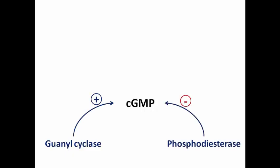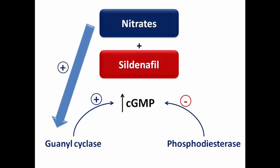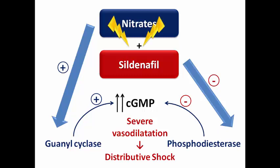To illustrate: guanylate cyclase stimulates the formation of cyclic GMP, and phosphodiesterase breaks it down. Nitrates stimulate guanylate cyclase, increasing cyclic GMP, while sildenafil inhibits phosphodiesterase, also increasing cyclic GMP. This combination can result in severe vasodilation, up to the degree of distributive shock due to reduction in systemic vascular resistance. That's why this combination is very dangerous and may be life-threatening for the patient.